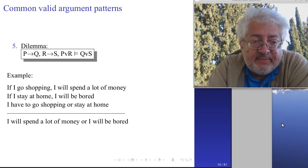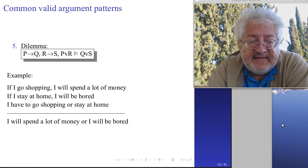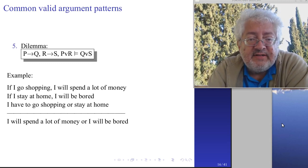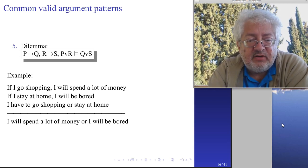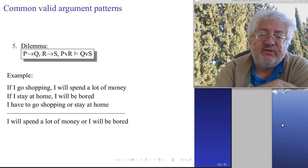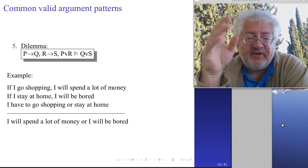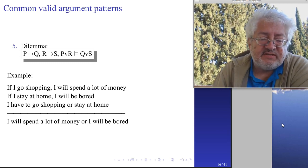There is also the dilemma: three premises - p implies q, r implies s, and p or r must be true - therefore q or s must be true. A real-world example: if I go shopping I will spend money; if I stay home I will be bored; I have to go shopping or stay home; therefore I will spend a lot of money or I will be bored.